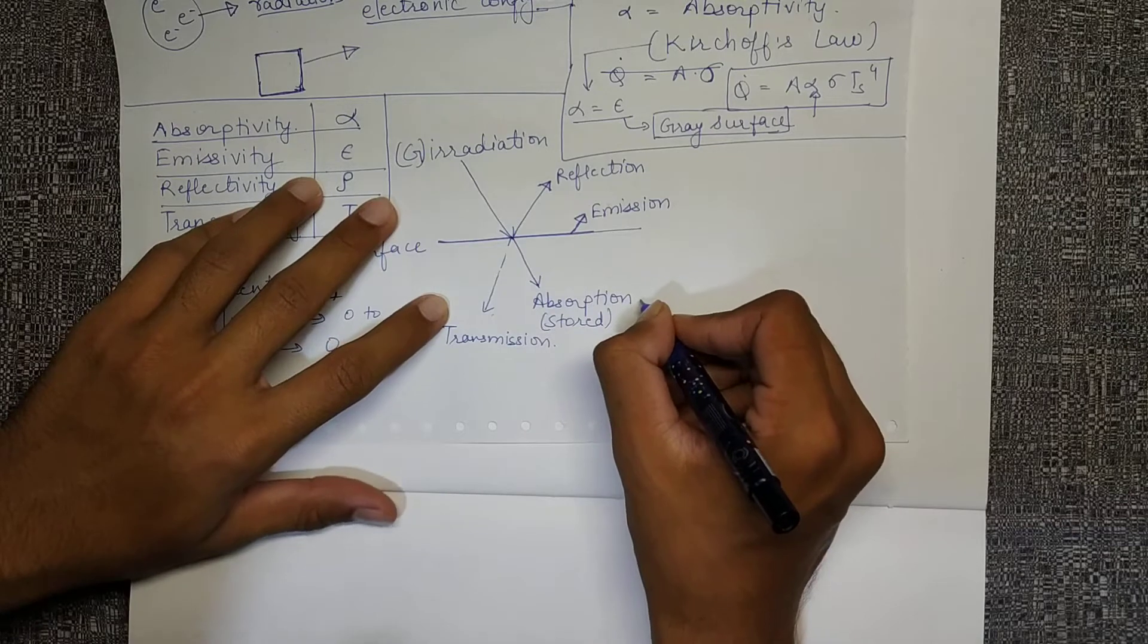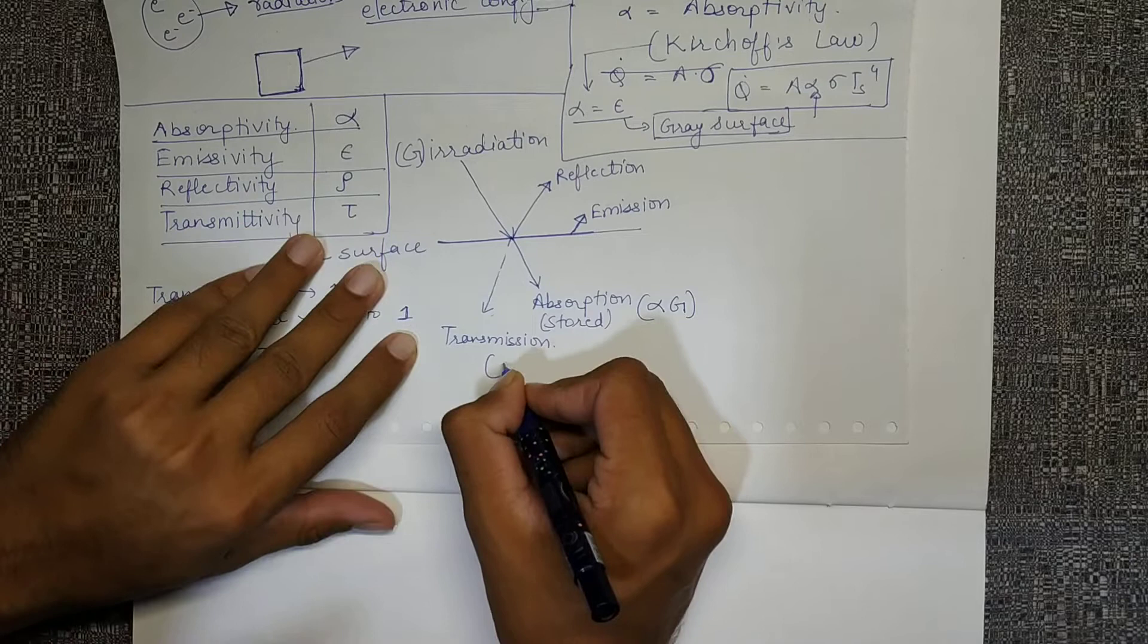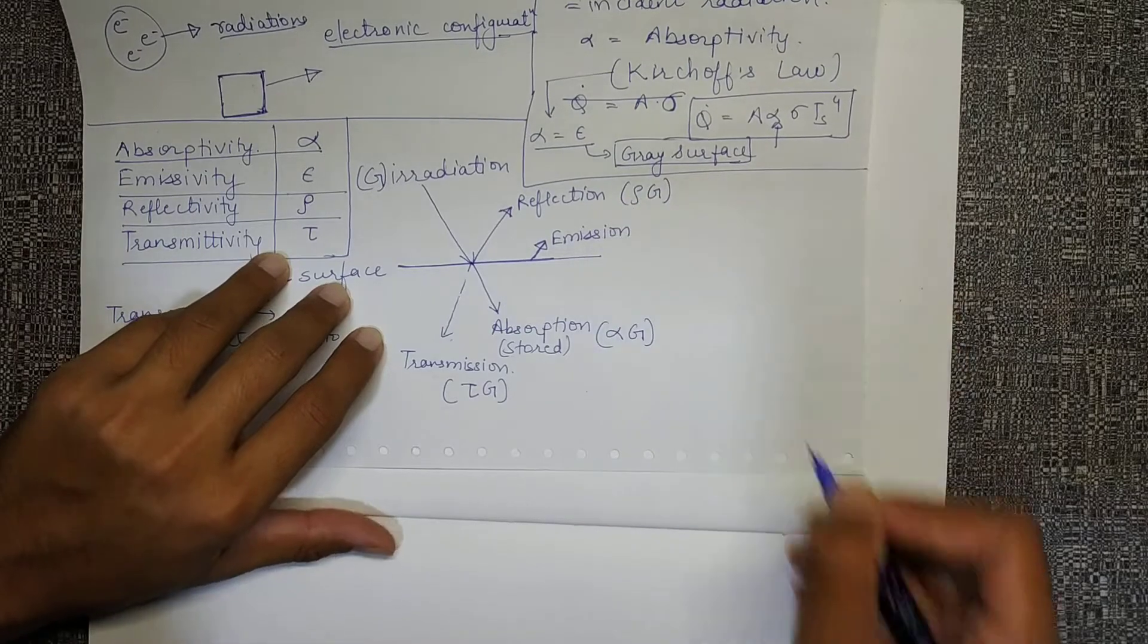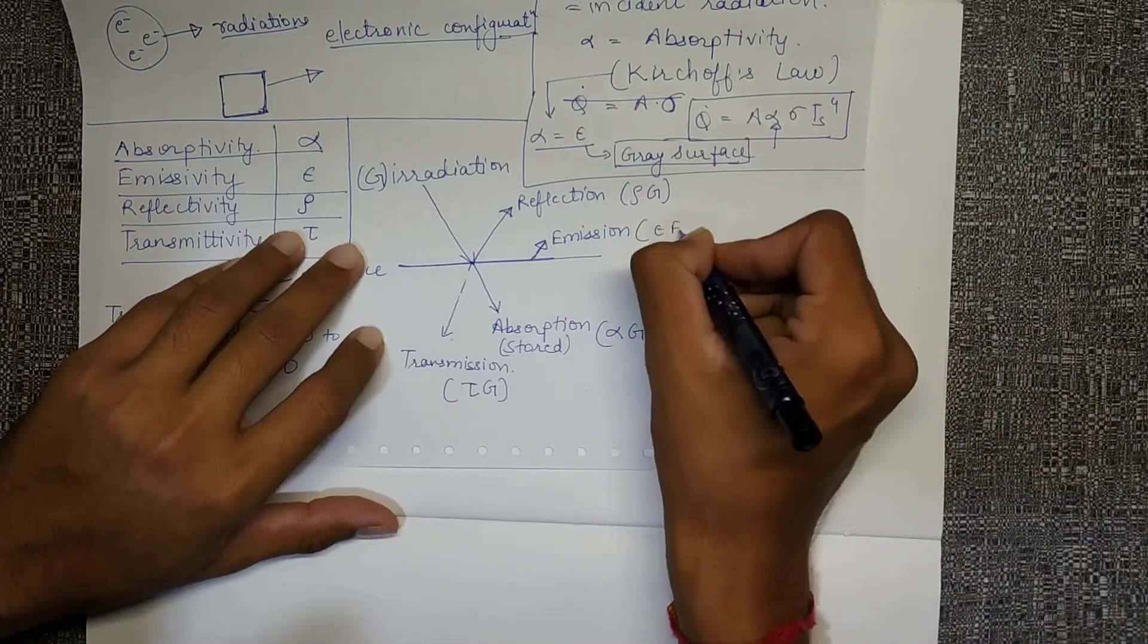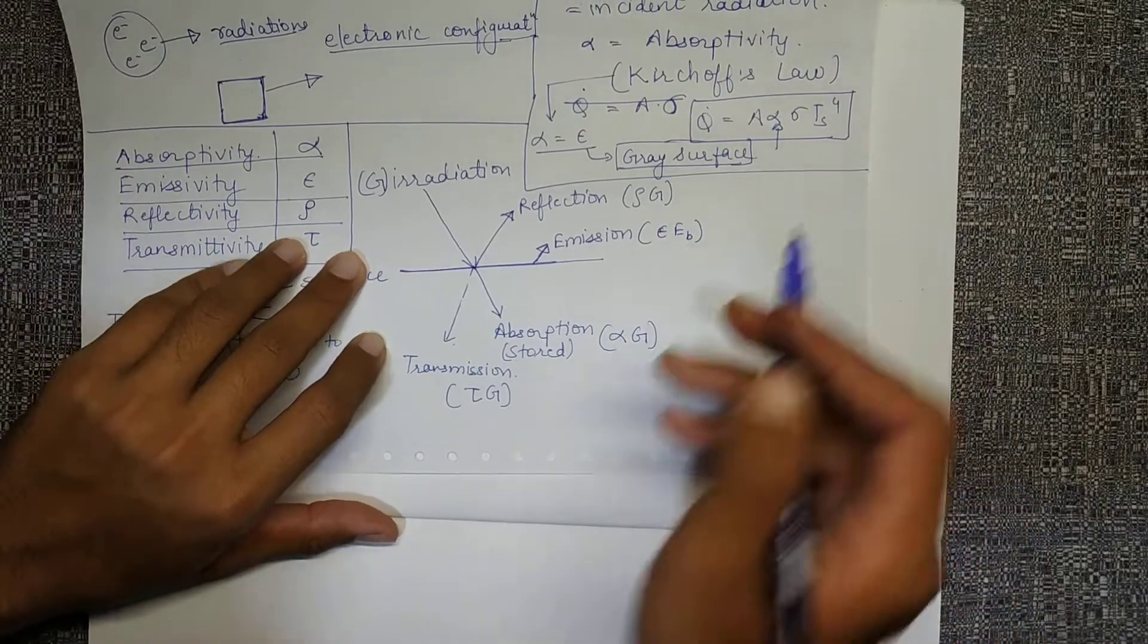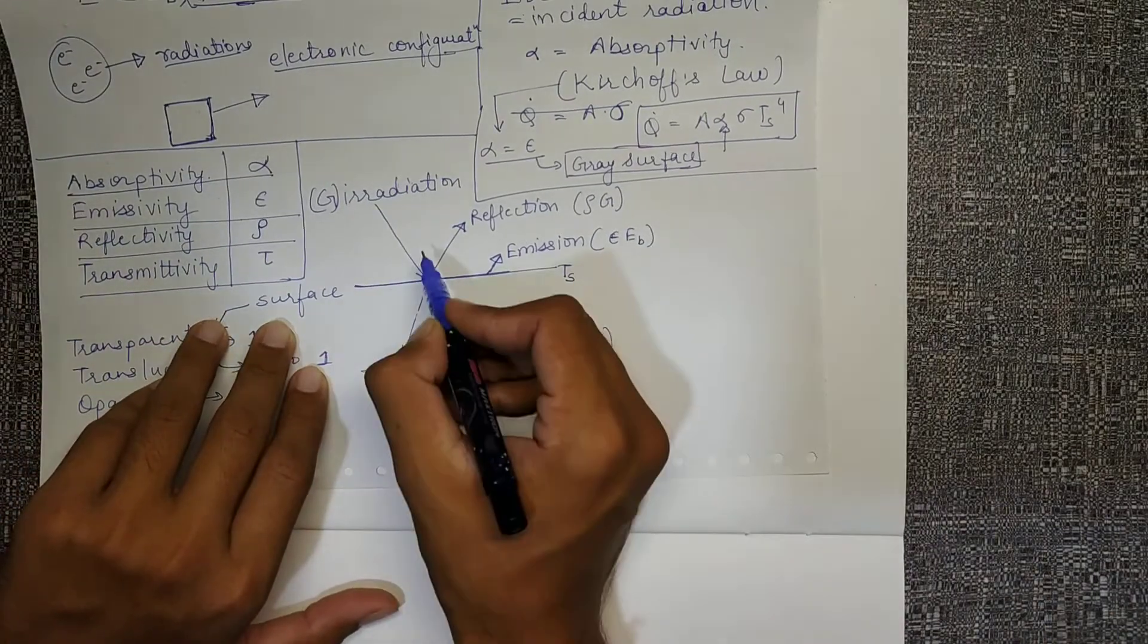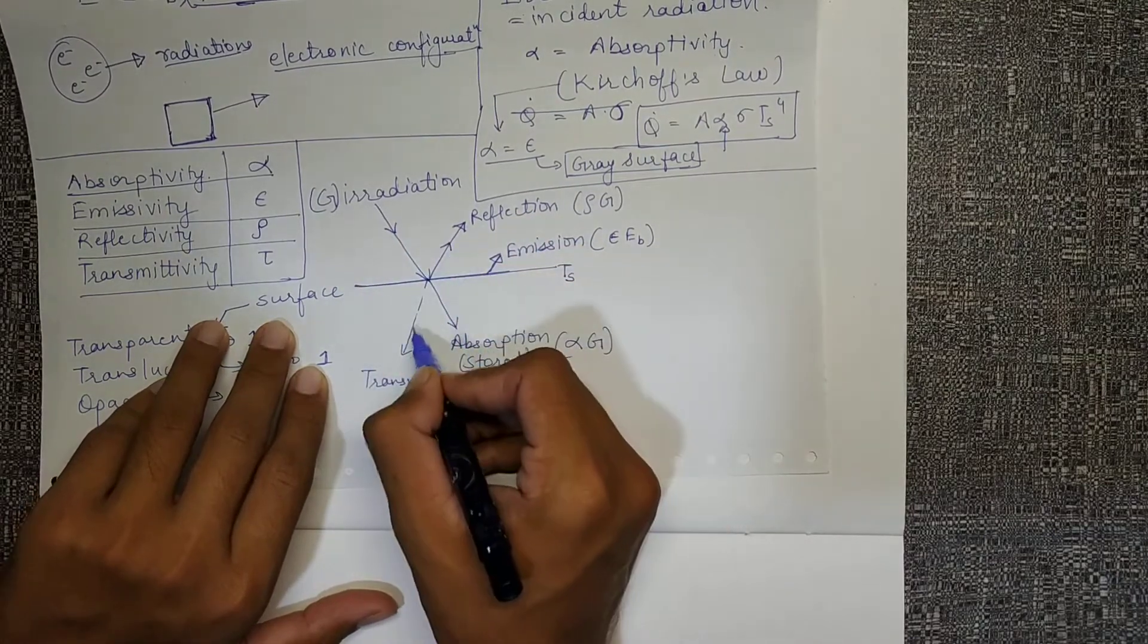Now the G was coming, the G amount was coming. We have absorbed the alpha G amount, transmitted the tau G amount, reflected the rho G amount. And emission depends on emissivity and the black body emission power. Since some energy was coming and some energy is reflected, absorbed and transmitted, that means if we add this all.